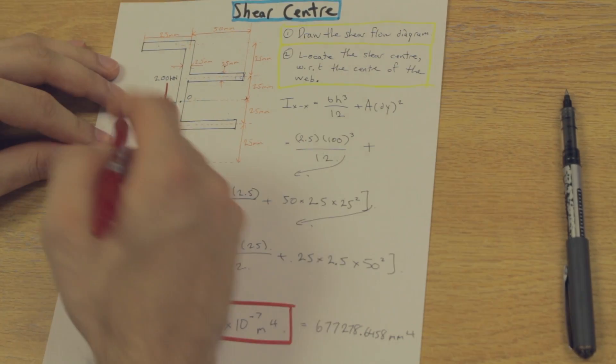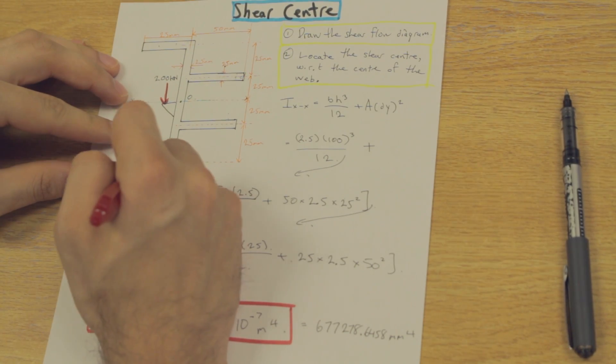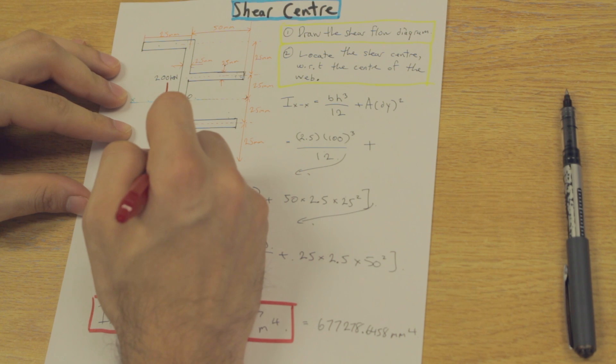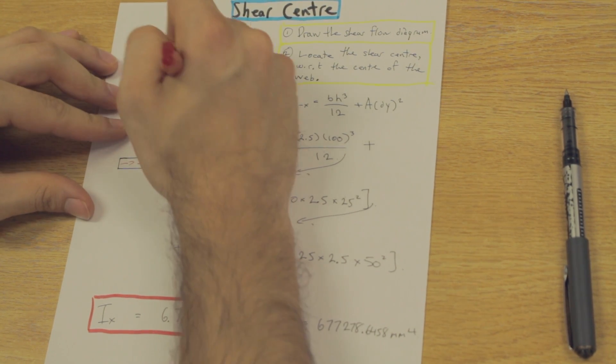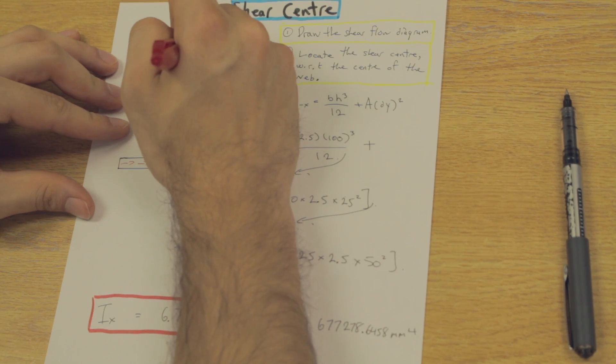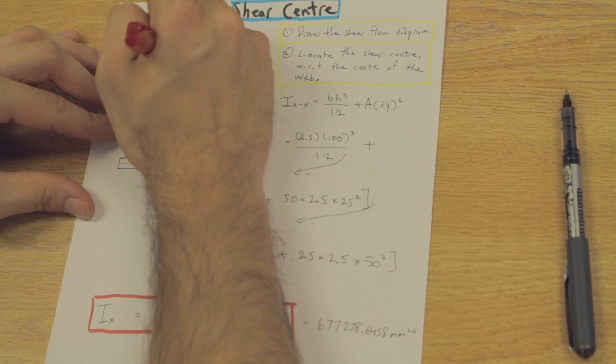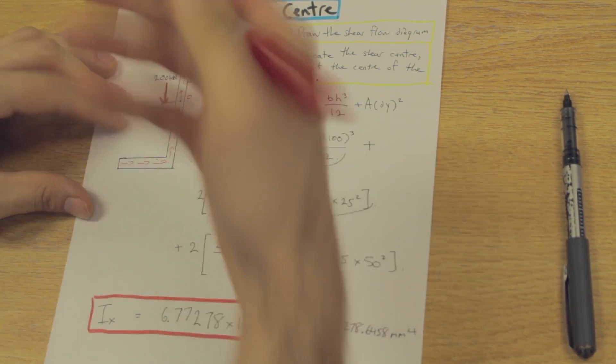So in this particular cross section, the shear flow is going to flow like this. And this is kind of just practice. You just need to look at the direction of the shear flow of different cross sections and get a feel for the way that it works.